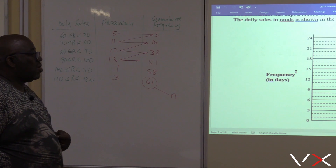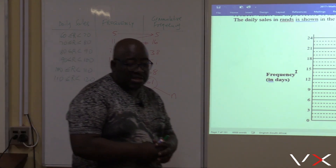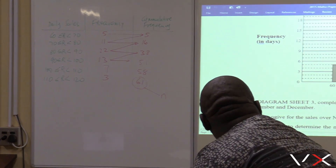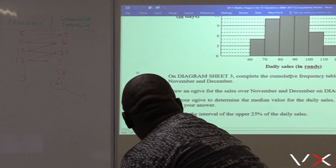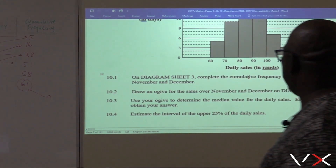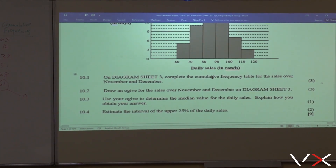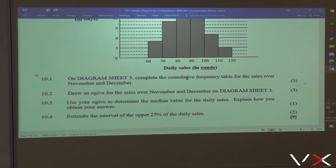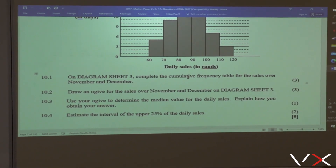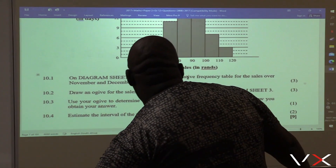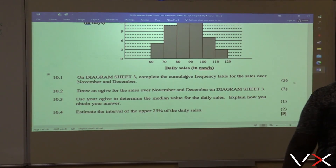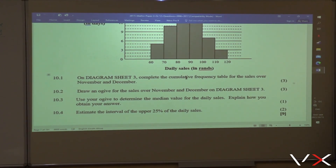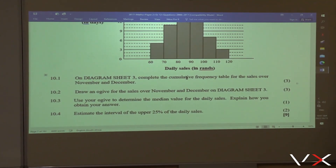That was the first part — why we had to complete that table. We just completed question 10.1 and we are moving to 10.2. The question says: draw an Ogive for sales over November and December on the diagram sheet. We will be sketching our Ogive on this side.